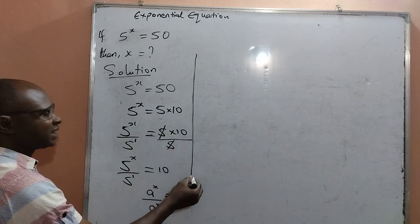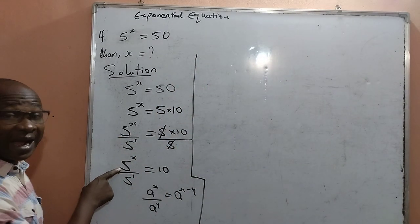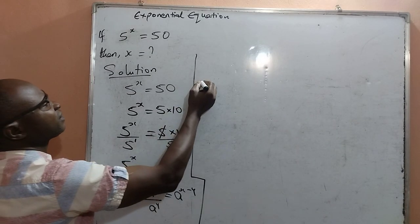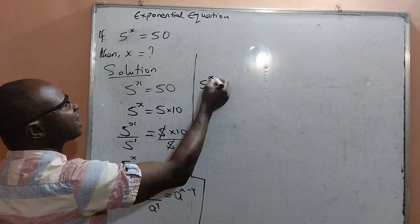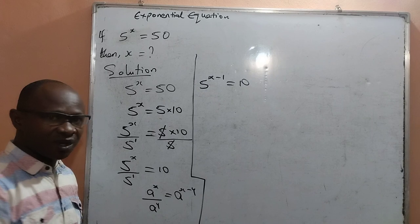Therefore, if I apply that to the left hand side, where I got 5 raised to the power x divided by 5 raised to the power 1, it will now be written as 5 raised to the power x minus 1, equal to 10. This is what it will be.